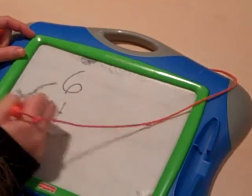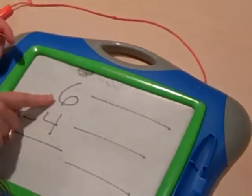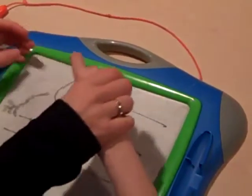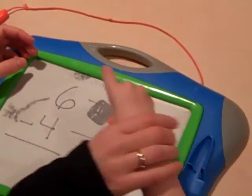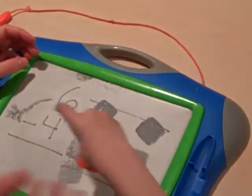Six. Take away four equals. Okay, ready? Count six. One, two, three, four, five, six. One, two, three, four, five, six. Good job.